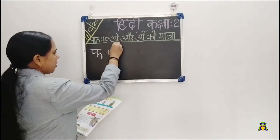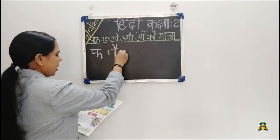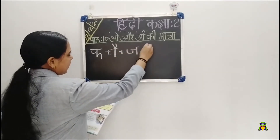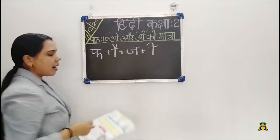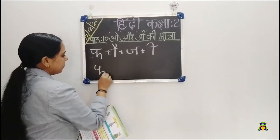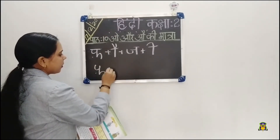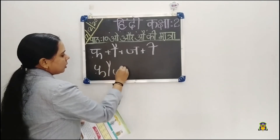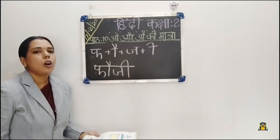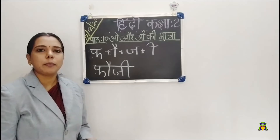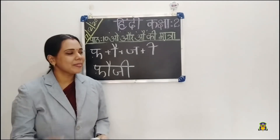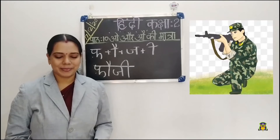Next word: fa plus au matra, ja plus ee matra. The word is fawji. Fawji means military.